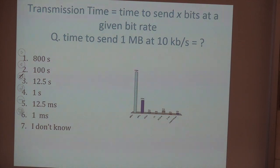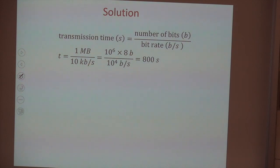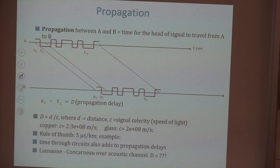The majority has the right answer. The transmission time is the number of bits divided by the bits per second — that gives seconds. Here it gives 800 seconds. Something a bit less trivial is the difference between transmission and propagation time.